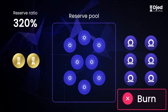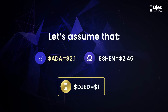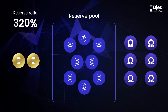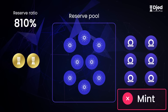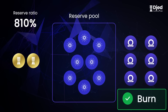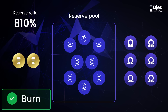Users also cannot burn SHAN, but they can mint SHAN since it will bring more ADA to the pool. Now let's see what happens when ADA's price goes up. Based on our previous example, let's assume ADA's price went up to $2.1. If we assume that the amount of SHAN minted did not change, the price of SHAN would now be $2.46. Now the reserve ratio is 810%, since the 8 ADA in the reserve pool now equal $16.8. In this scenario, users will not be able to mint SHAN, since the pool is already more than 800% collateralized. However, they will still be able to burn SHAN in order to lower the ratio, and they will also be able to burn and mint JED.